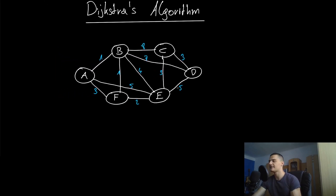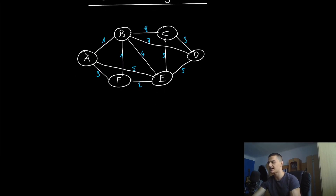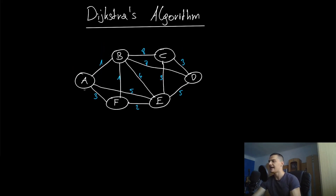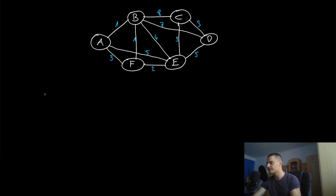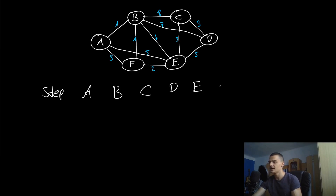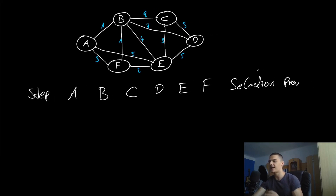The Dijkstra algorithm finds the shortest path from a starting node A to any other node — not just a specific target. To apply it, we set up a table with columns: step, then one column each for A, B, C, D, E, and F, plus two more columns: selection and previous node.